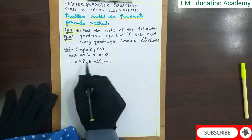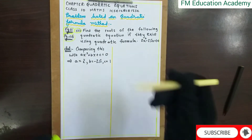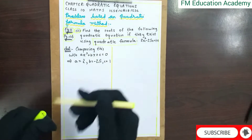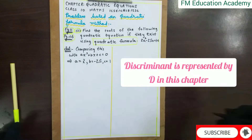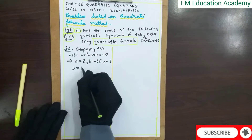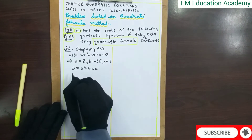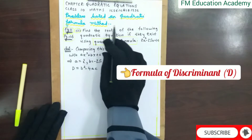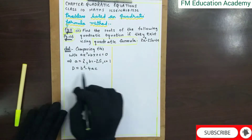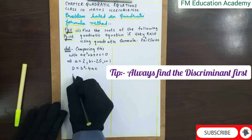After finding a, b, and c for the quadratic formula method, always remember to find the discriminant. The discriminant is represented by D, and the formula is D = b² − 4ac. So whenever a problem asks you to find roots by the quadratic formula method, always find the discriminant D first.